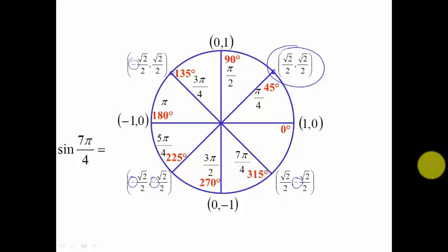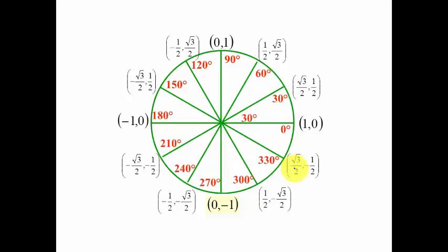So sine of 7π/4, I just need to come around here, and it's just the y value as we show here, negative square root 2 over 2.